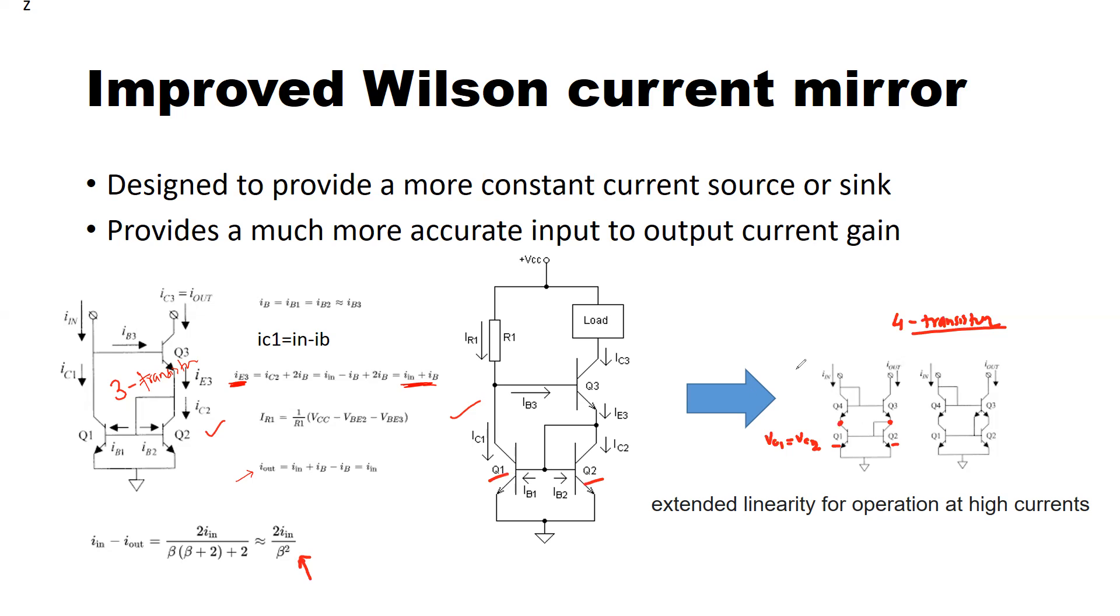And some other errors can be there, but the penalty here is that you have to have a cascading of the transistors. So the compliance voltage or the output voltage that you apply here—that is the minimum V_out—has to be maintained in order for Q3 and Q2 to operate in the saturation region. So that's the penalty.